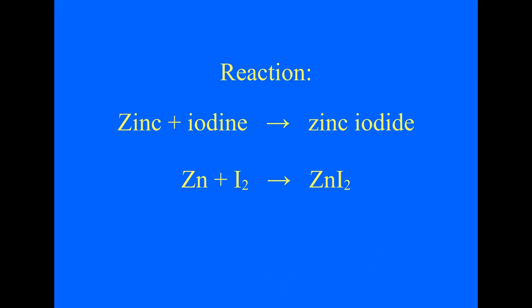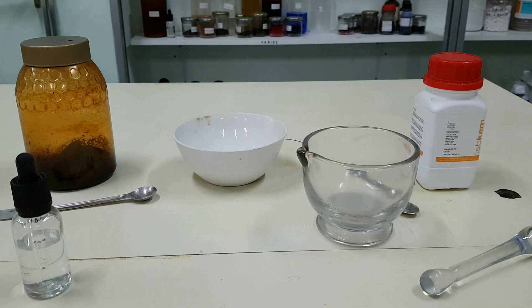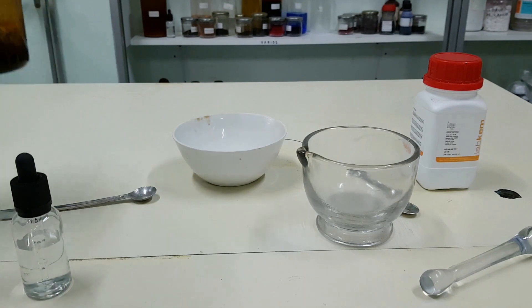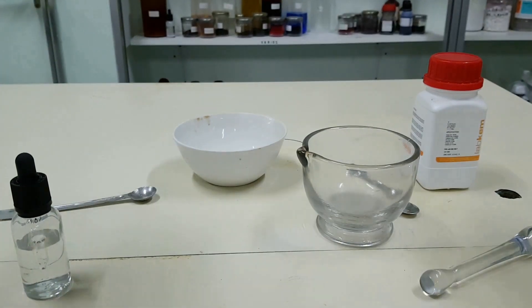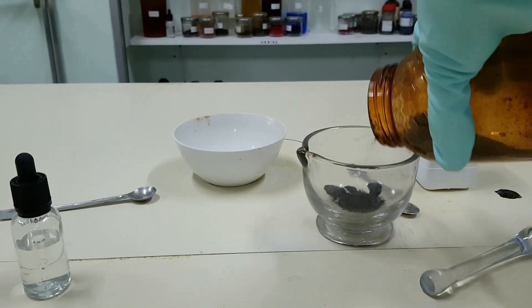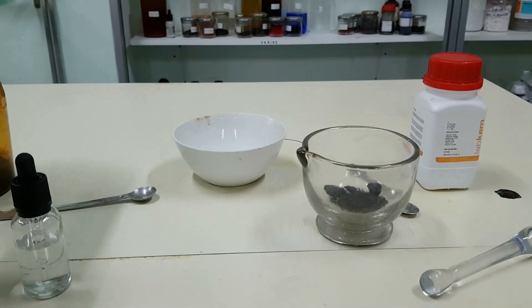Let's make the zinc react with the iodine, thereby obtaining zinc iodide. This is the iodine. As it is clump-shaped, put the iodine into a mortar and crush it.